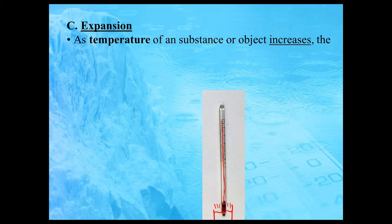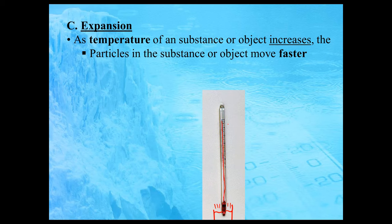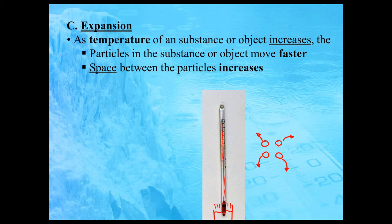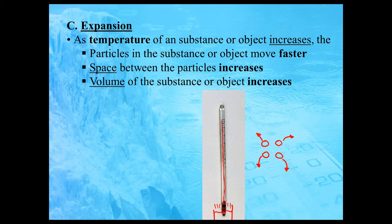When you heat up the substance — in this case, the colored alcohol — the particles in the substance are going to move faster. They're moving faster because you're giving more energy to them, and if you have more kinetic energy, your particles move quicker. When the particles move faster, they tend to move apart. So if you have a bunch of particles in a substance that suddenly gain a lot of energy, they buzz around a lot more, and there ends up being more space between them. If the space between the particles increases, the volume of that substance increases.